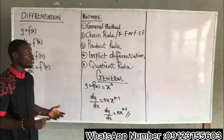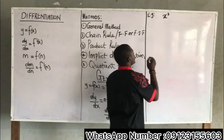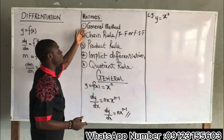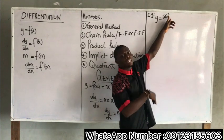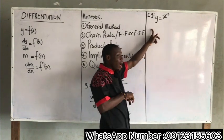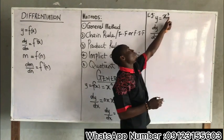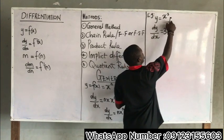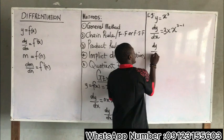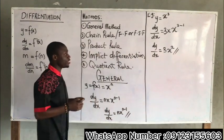Let's take an example. If Y equals X to the power of 3, differentiating Y with respect to X gives dy over dx. The power is 3, so we multiply by the power and subtract 1: dy over dx equals 3X to the power of 3 minus 1, which is 3X squared. That is the answer after differentiating using the general method.